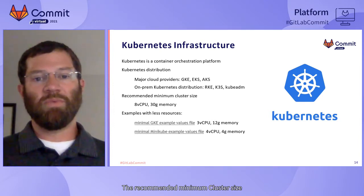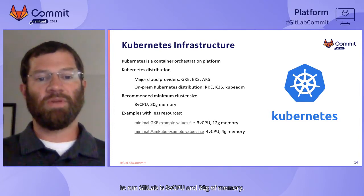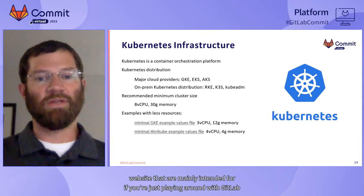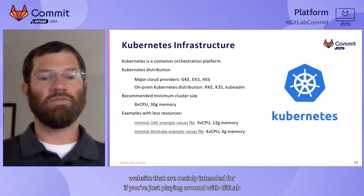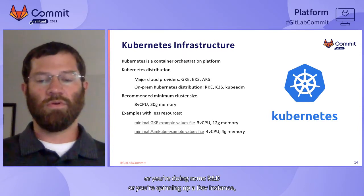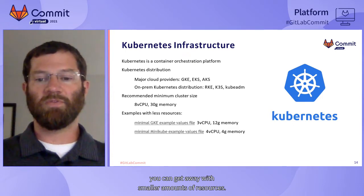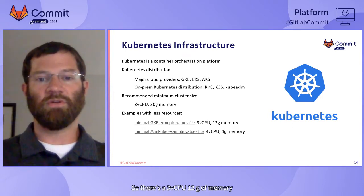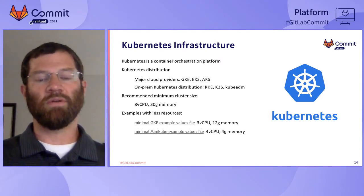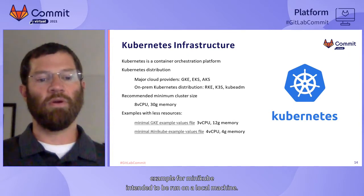The recommended minimum cluster size to run GitLab is 8 vCPU and 30 GB of memory. There are some examples on the GitLab website intended for playing around or doing R&D — a 3 vCPU 12 GB of memory example, as well as a 4 vCPU 4 GB of memory example for Minikube intended to run on a local machine.